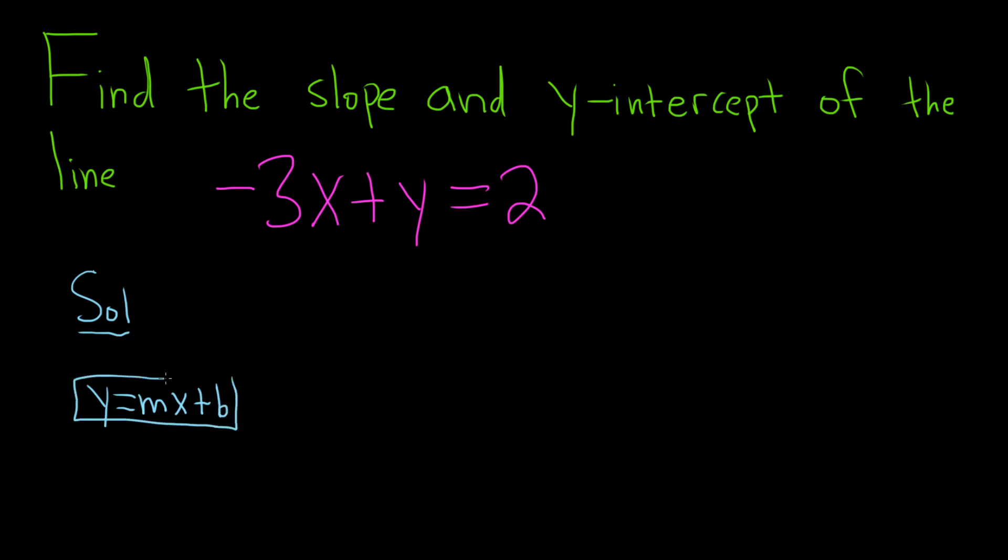Once we write it this way, we can identify the slope and y-intercept. Once we do that, we'll know m is equal to the slope, and the ordered pair (0, b) is the y-intercept. It's always a 0 for the x whenever it's the y-intercept.